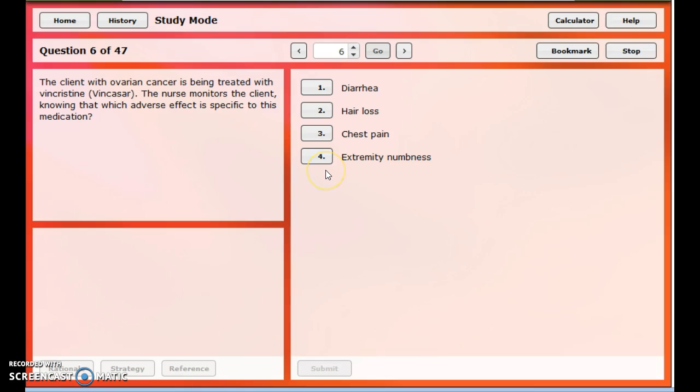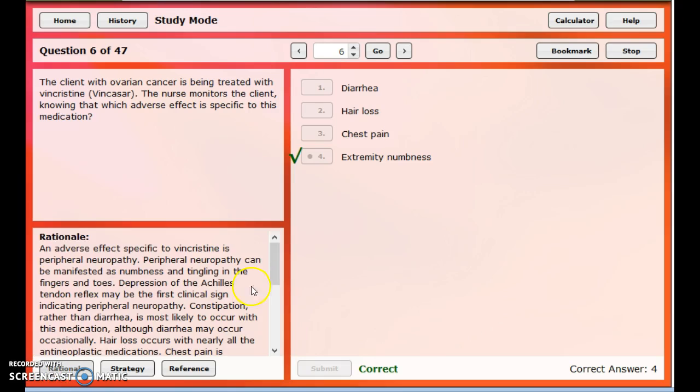I know extremity numbness, I had that picture of the foot with taxan it, right? So I know that's right. Chest pain was related to the other mitotic inhibitor, the taxanes. That would be one of those signs of the hypersensitivity or impending anaphylaxis is the chest pain, blood pressure is going to drop. Our rationale is peripheral neuropathy is one of the things that's specific to the mitotic inhibitors, especially vincristine.